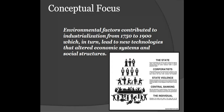Looking at this social hierarchy, we can ask ourselves: is this an accurate representation? Did humanity really lose its way because of the Industrial Revolution? Did all of the promise of the Enlightenment and the political revolutions that precede the Industrial Revolution — did those values get sold out because of capitalism and money? In order to answer a question such as that, we'll have to take a deeper dive look into the Industrial Revolution itself.